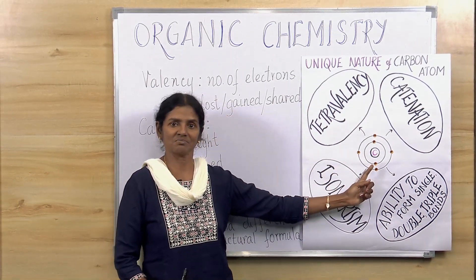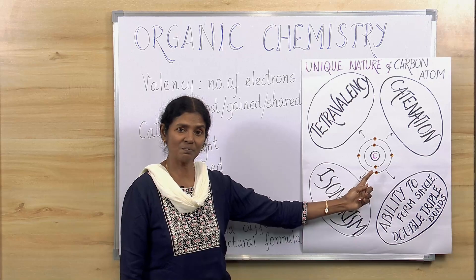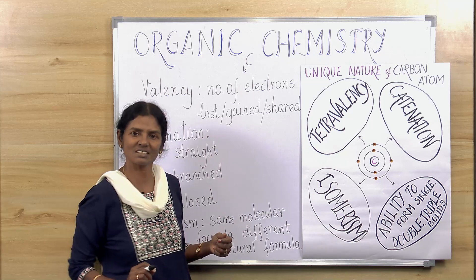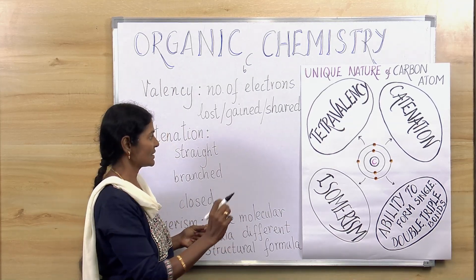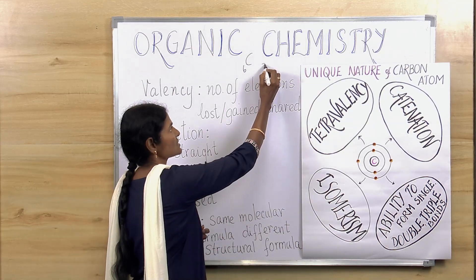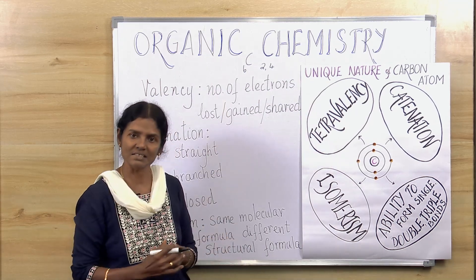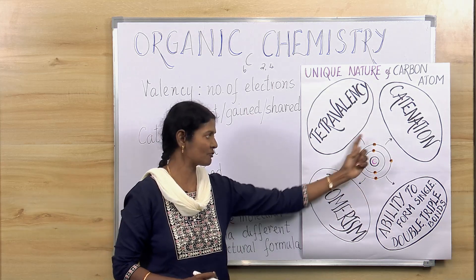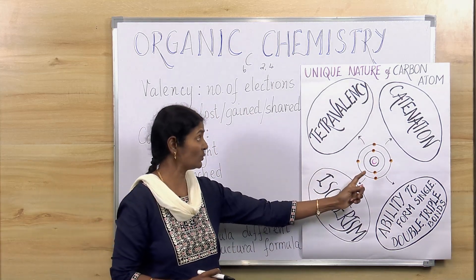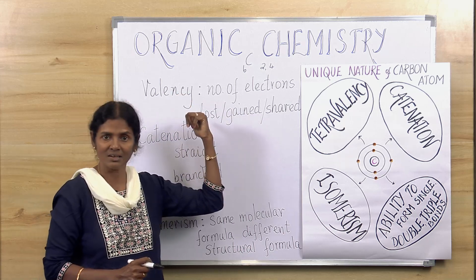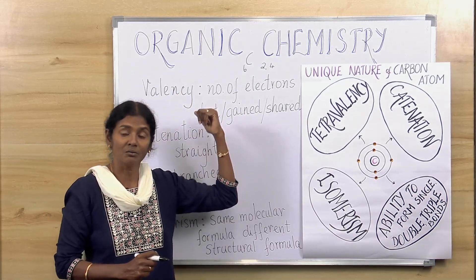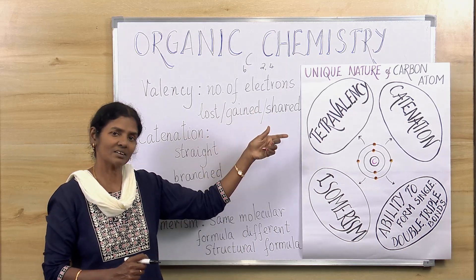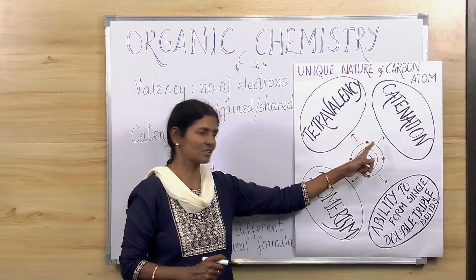Look at this carbon atom. This is a structure of carbon atom. It has an atomic number six, which means there are two electrons in the first shell and four in the second shell. Now, let's go back to the valency. How do you define valency? Valency is the number of electrons lost or gained or shared. Here you have something like four.